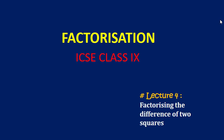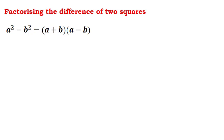Namaste everyone. Welcome to the fourth lecture of factorization. This is Rajesh, and in this lecture we are going to see factorizing the difference of two squares. Let us understand what is factorizing the difference of two squares. We can see that a squared minus b squared can be written as (a + b) into (a - b). We are going to see the problems which are in the form of a squared minus b squared.